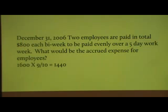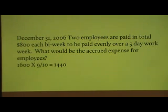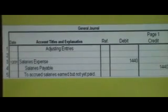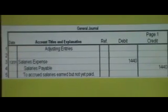Accrued expense adjusting journal entry — December 31st 2006: two employees are paid in total eight hundred dollars each biweekly period, to be paid evenly over a five-day workweek. You would multiply eight hundred times two to get sixteen hundred dollars, times nine divided by ten, to get one thousand four hundred and forty dollars in salaries expense. There are ten days in a biweekly period; the employees had worked nine of those ten days prior to the end of the month, but because paychecks are staggered they will not be paid until the following Friday. The journal entry is: debit salaries expense one thousand four hundred and forty, credit salaries payable one thousand four hundred and forty.